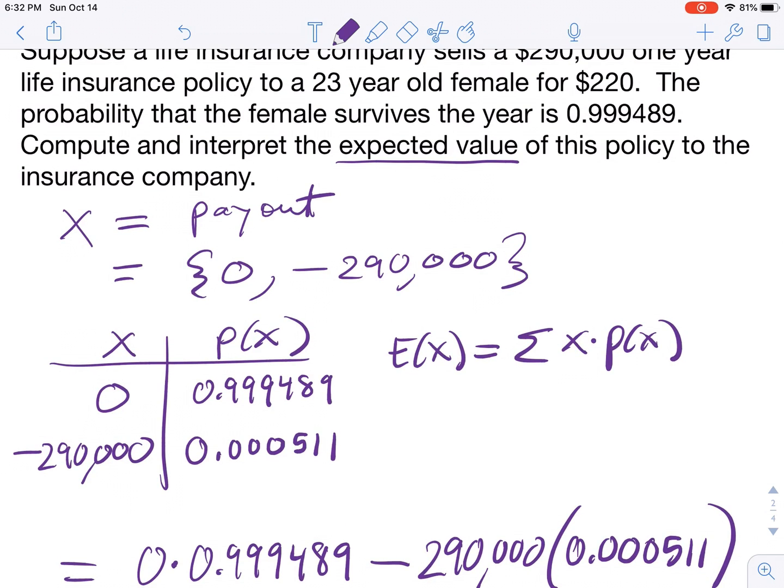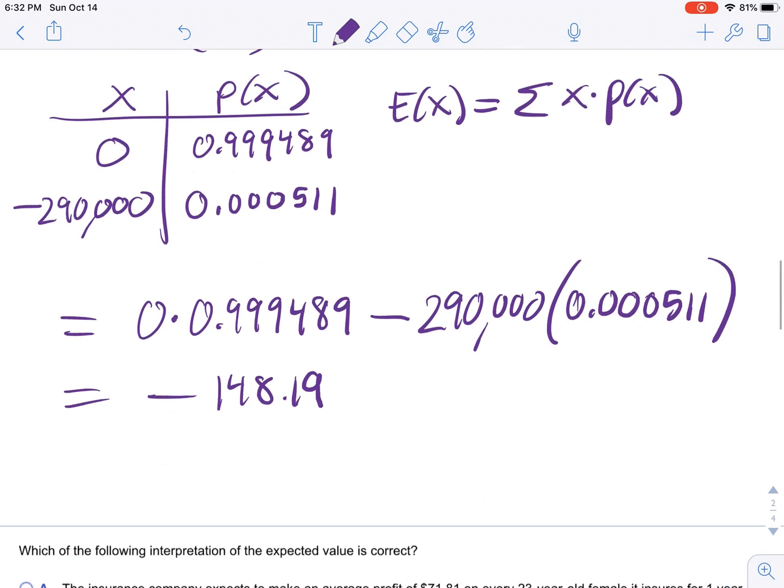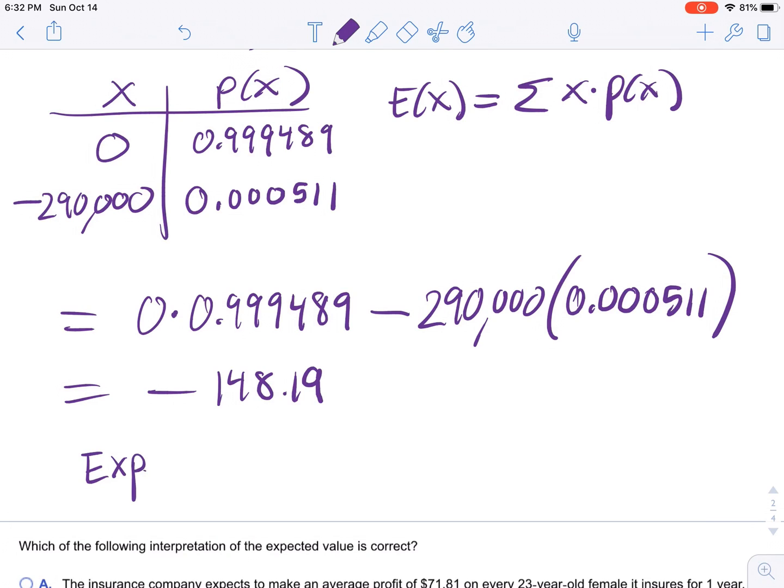However, they are making $220. So the expected value or profit in this case... Really, it should be asking for the expected profit. So it's $220 minus $148.19, which equals $71.81 if you plug it into a calculator.